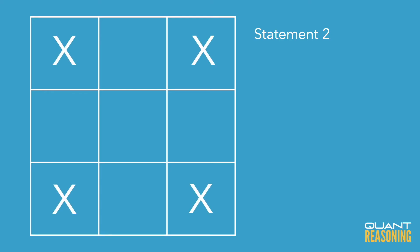So how many X's are there? It could be four, five, six, seven, eight, or nine. This one is not sufficient on its own either. Go ahead and eliminate B.